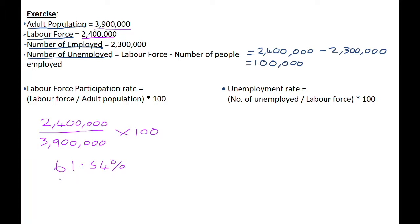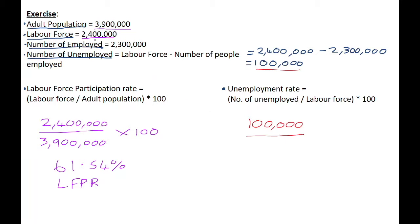So 61.54% is the labor force participation rate — the proportion of adults who are participating in the workforce in our situation. We can also work out the unemployment rate. Because we've already calculated that the number of people unemployed is 100,000, we divide that by the labor force.